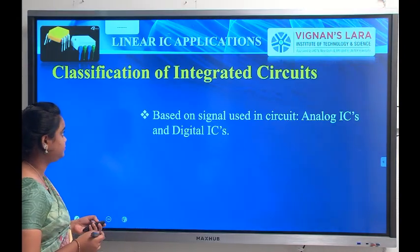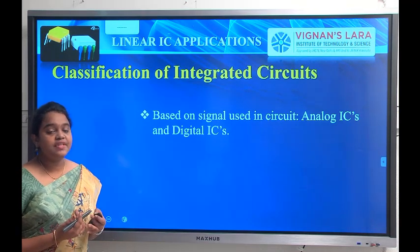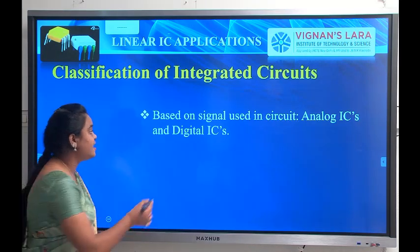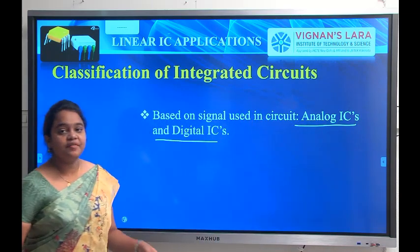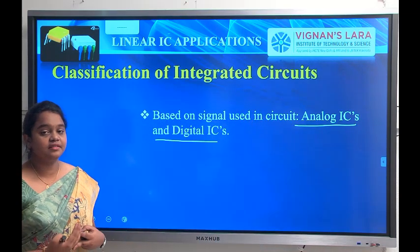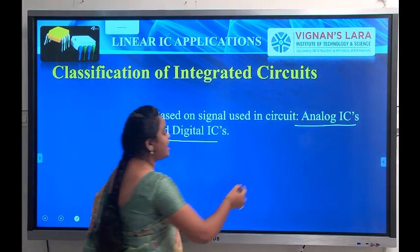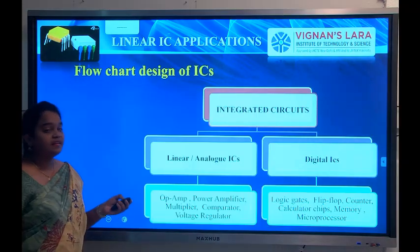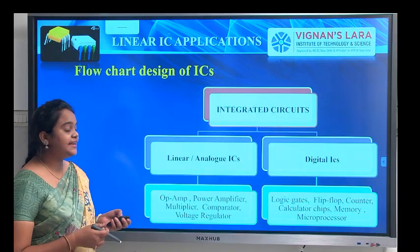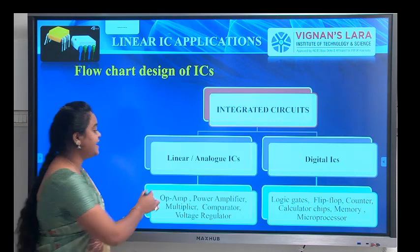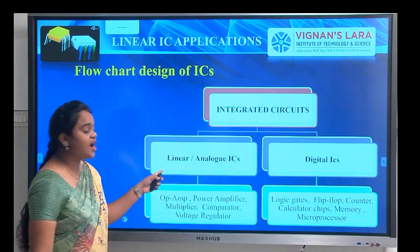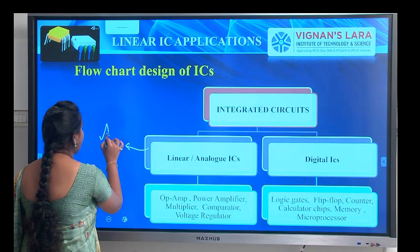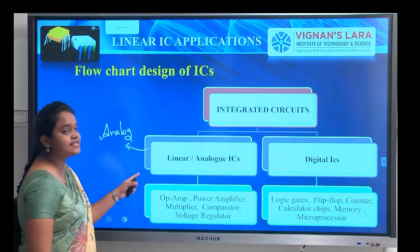Based upon the signals used, integrated circuits are divided into two types: Linear ICs (Analog ICs) and Digital ICs. When the signal is in the form of an analog — that is, a signal which varies continuously with respect to time — it is called a Linear IC. An example of an analog signal is the signal used in landlines.